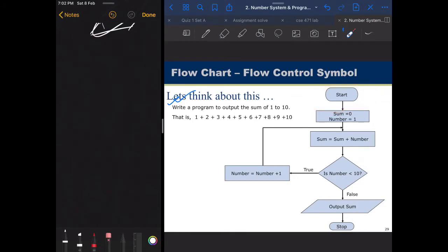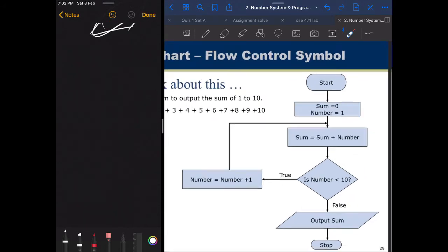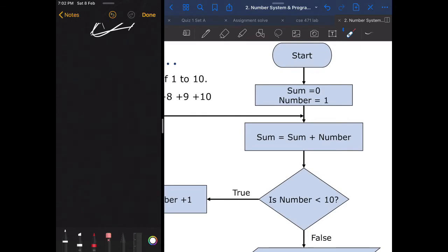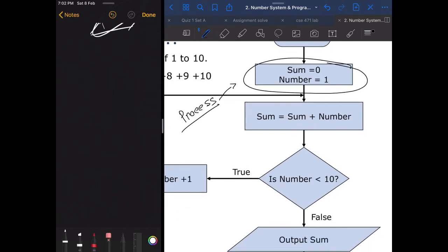As usual, we are going to start with start, and that is an oval box. Then we are going to initialize value. Remember, when we are doing any calculations or initializing any values, that's always in a rectangle. Rectangles are basically there to show that there is a process going on.